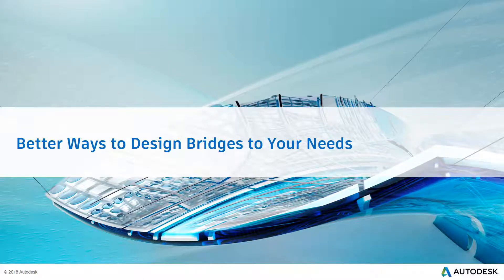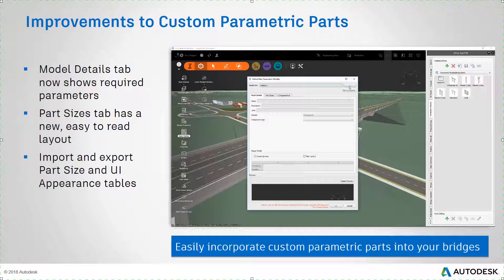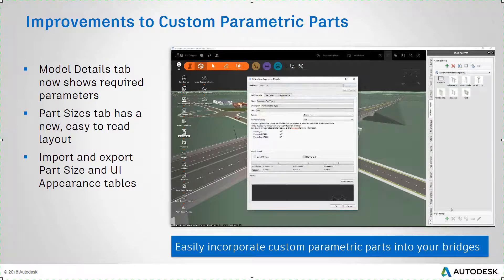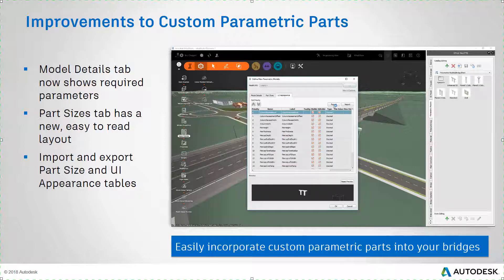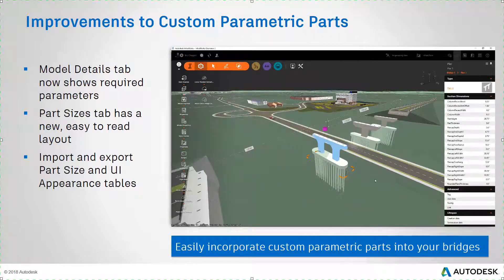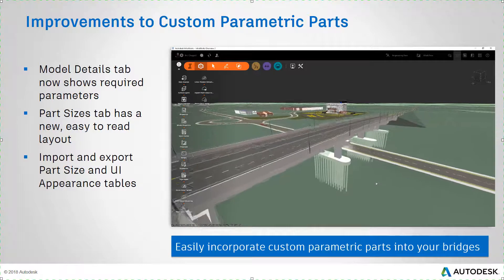Next, we'll learn about better ways to design bridges so that you can meet your specific design requirements. In the latest release of InfraWorks, you'll find improvements to the workflow for incorporating custom parts into your bridges. For example, when defining a new parametric model, the Model Details tab will show you if you've provided the required parameters for the model to work. Also, the Part Sizes tab has a new, easy-to-read layout. And finally, you can now import and export the information on the Part Size and UI Appearance tabs, making it easier to configure parts in other models. These changes make it easier than ever to incorporate custom parametric components into your bridges.